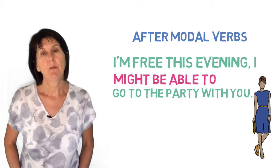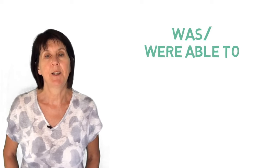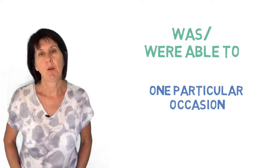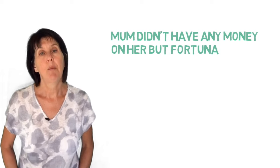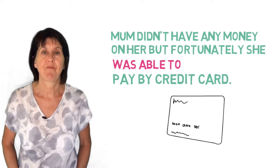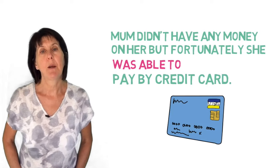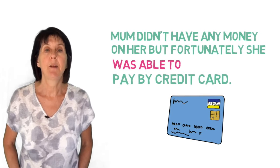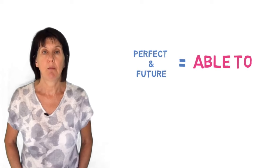We use was and were able to when speaking about something someone succeeded in doing on one particular occasion. For example, mum didn't have any money on her, but fortunately she was able to pay by credit card. When talking about ability, we use can in the present and could in the past, but for perfect and future tenses we use able to.